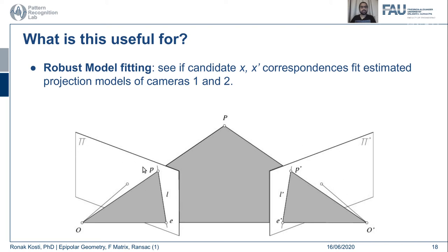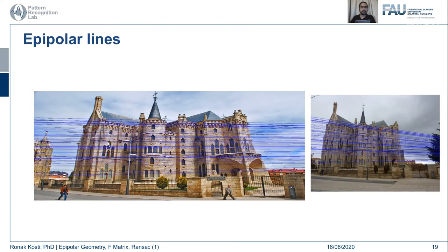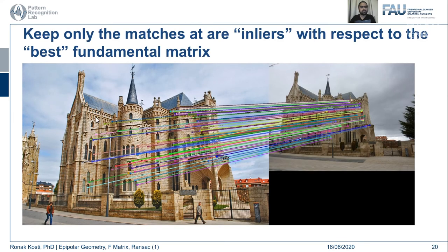If you already know X and X-dash correspondences and the 3D location, you can also estimate the relative orientation and position between the cameras, as well as the 3D position of all remaining points in the image. It is also possible to fit a robust model iteratively. If you have some feature points in one plane and find potential matches in Pi-dash, you can use the epipolar constraint to filter — keeping only those matches satisfying the constraint. These blue lines here correspond to the epipolar lines; once correspondences are found, outliers are discarded.